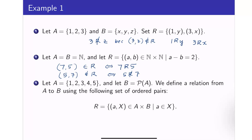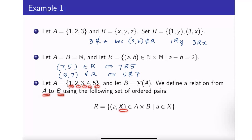Next, let us consider example 3. We have A = {1, 2, 3, 4, 5} and B is the power set of A. Recall the power set contains all the subsets of A. We define a relation from A to B using the following set of ordered pairs. This is a relation from A to B, so therefore the first coordinate here is an element of capital A — it can be 1, 2, 3, 4, or 5 — whereas X is an element of B, so X is a subset of A.